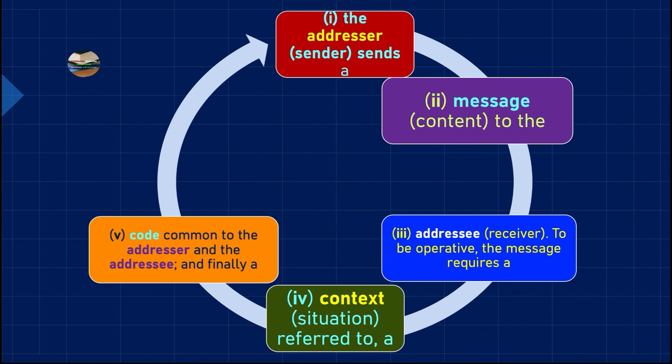English is our common code that enables communication between us. Two persons must share the same language — the same code — whether that is English, Arabic, Chinese, Korean, French, or any other language. If the language is not common to both the sender and the receiver, then communication cannot take place.